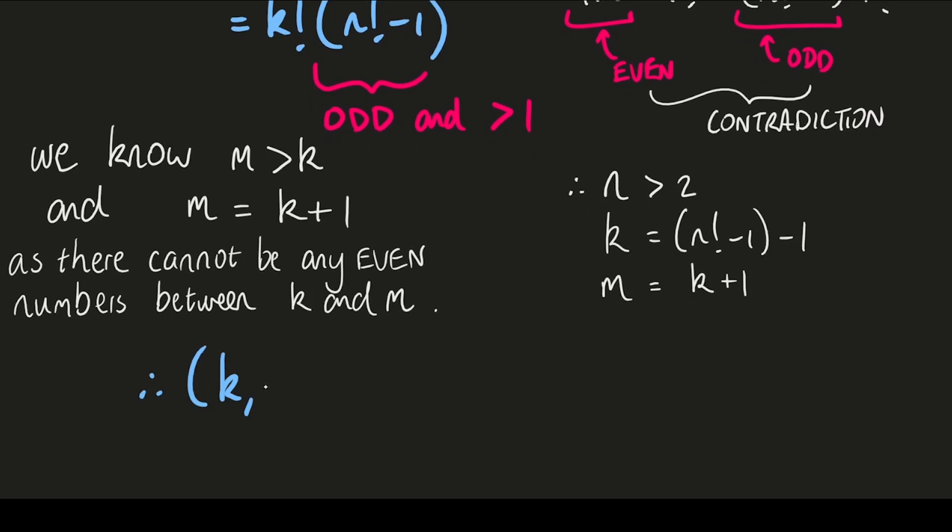We can express those as (k, m, n) where k is n factorial minus 2, m is n factorial minus 1, and n can be any integer larger than 2.